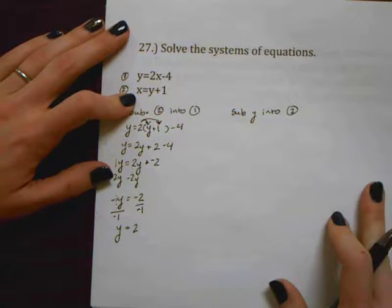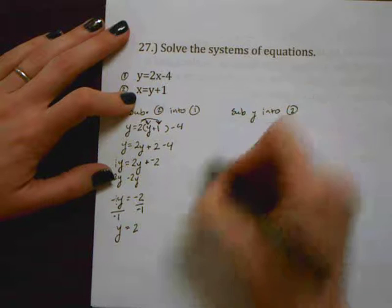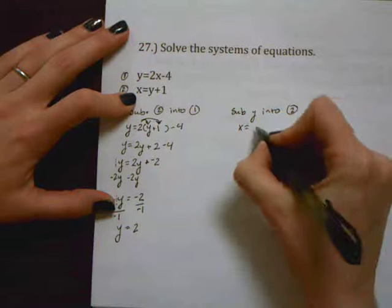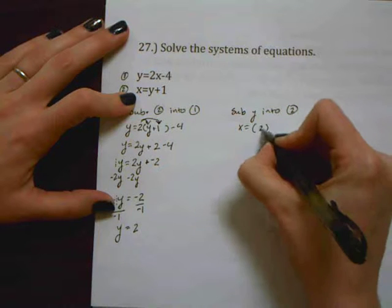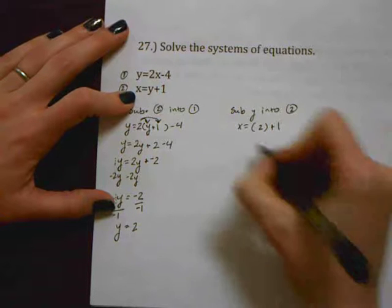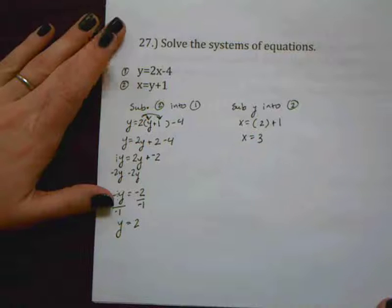The reason I chose 2 is because it already has x isolated so it's going to make my work a little bit easier here. So my y value is 2 so this is going to be x equals and instead of writing y here I'm going to write what y equals which is 2 and then plus 1. And then 2 plus 1 is 3.